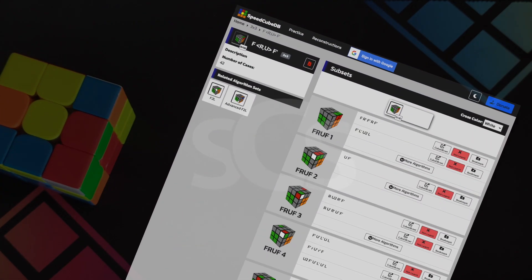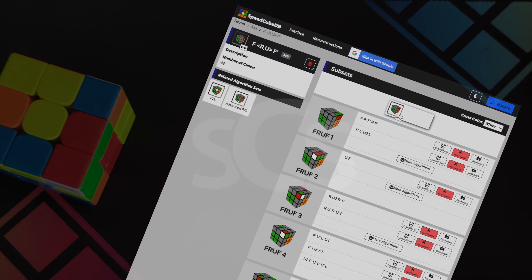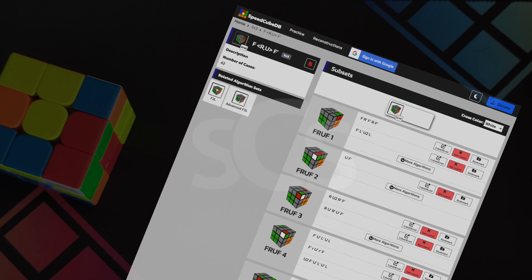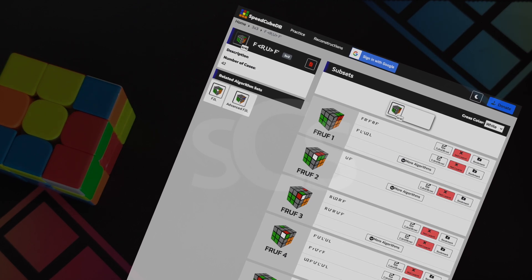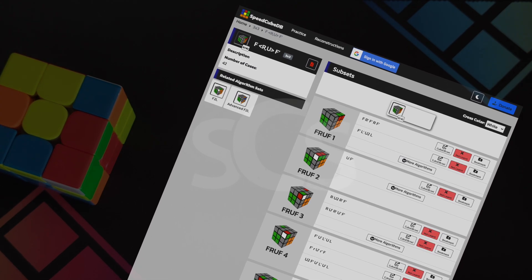Now here are some good resources for F2gen F'. Gil Zuzman's speedcubedb.com is a great resource for F2gen F' cases, specifically into the front-left slot, and it's also just a good resource for a lot of algorithms in general, I highly recommend you check it out.